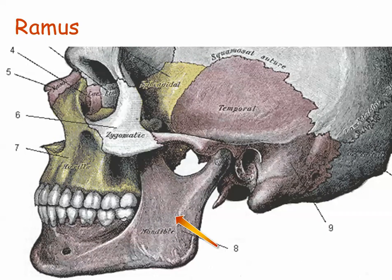A ramus is a curved portion of a bone, like a ram's horn. Here we see the part of the lower jawbone, the mandible, that curves upward. The word ramus literally means branch.